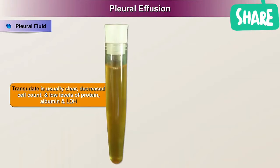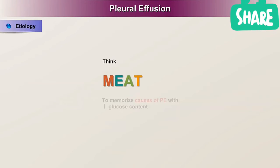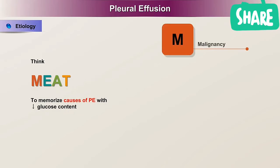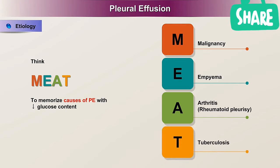Transudate is usually clear and has a decreased cell count, and has low levels of protein, albumin, and LDH. Exudate typically appears cloudy, has an increased cell count, and has high levels of protein, albumin, and LDH. Think MEAT to memorize causes of pleural effusion with decreased glucose content: M for malignancy, E for empyema, A for arthritis or rheumatoid pleurisy, and T for tuberculosis.